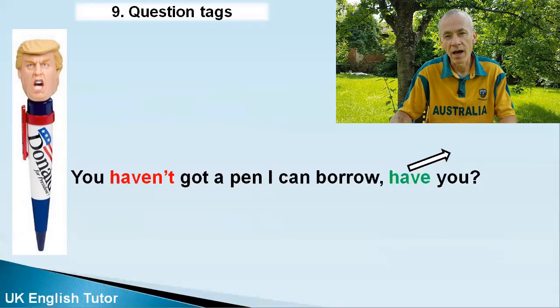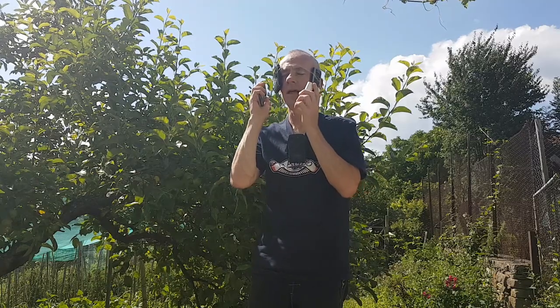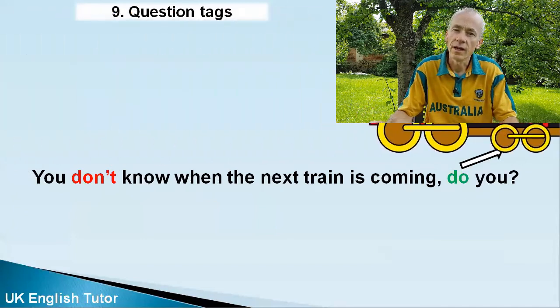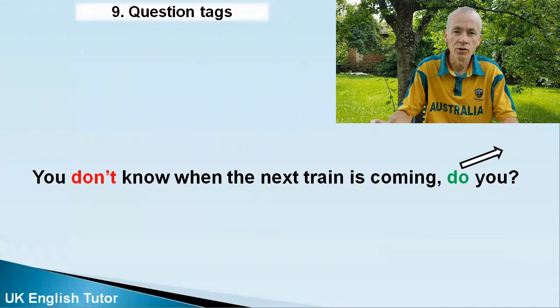'You haven't got a pen I can borrow, have you?' 'I need to make an emergency call — you haven't got a phone I can use, have you?' 'You don't know when the next train is coming, do you?' That was a lot of examples, wasn't it? So let's look in more detail, focusing on getting the form of the verb correct.